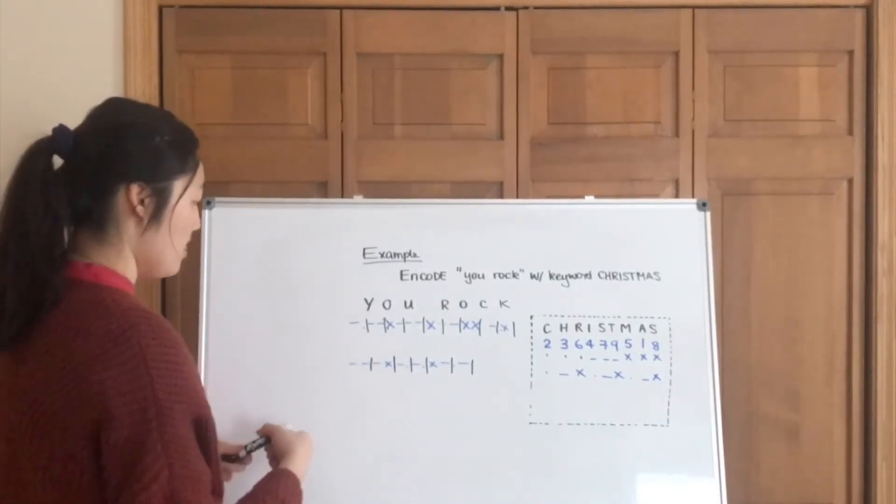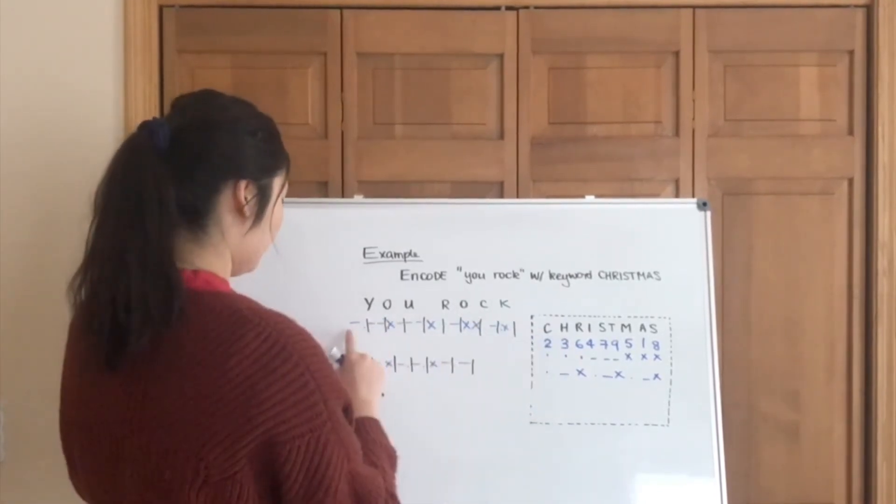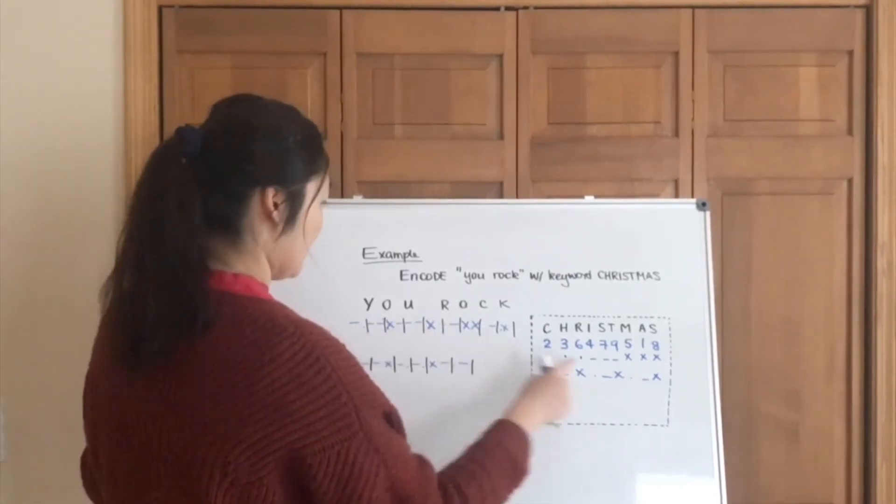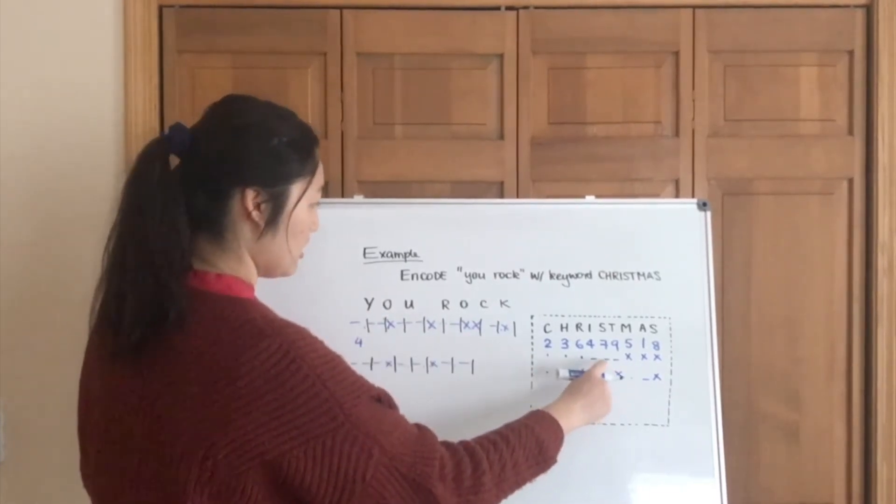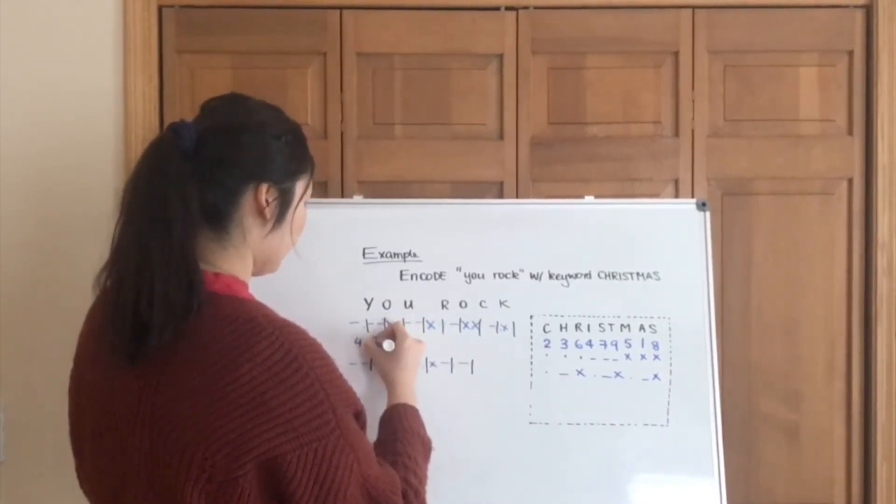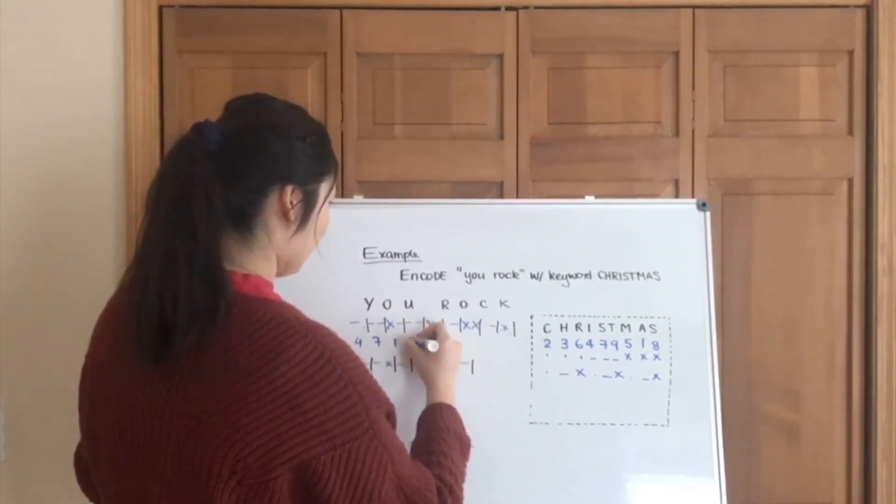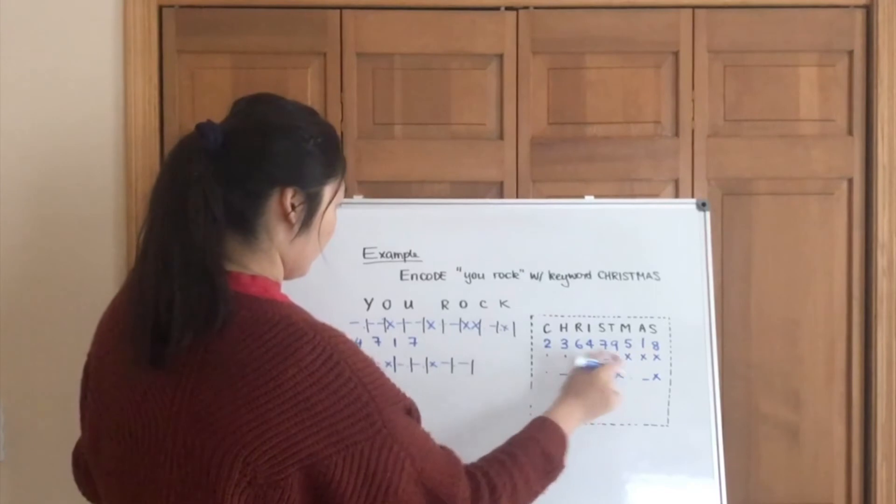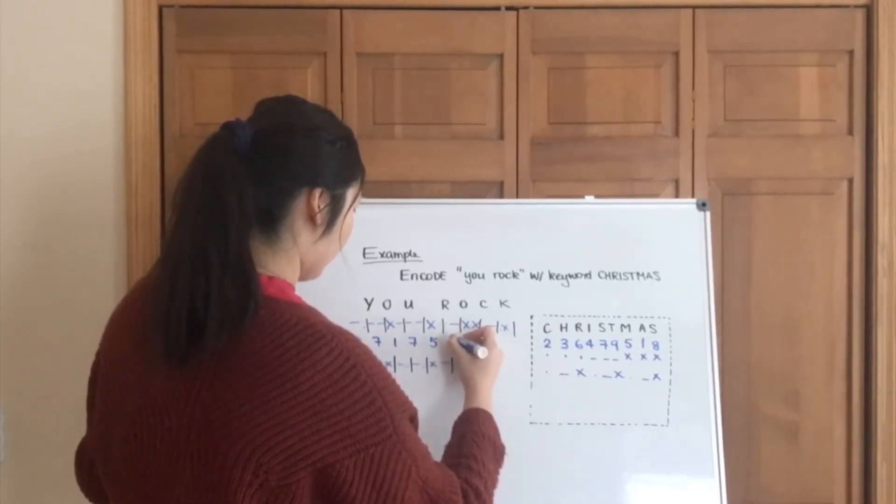Okay, and then we are going to map this onto numbers. So what is dash dot? Dash dot is a 4. Dash dash, here it is 7. X dash is 1, and then 7. X dot is 5. Dot dash is 3.